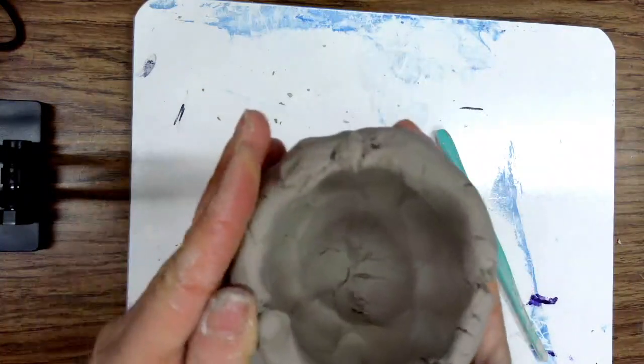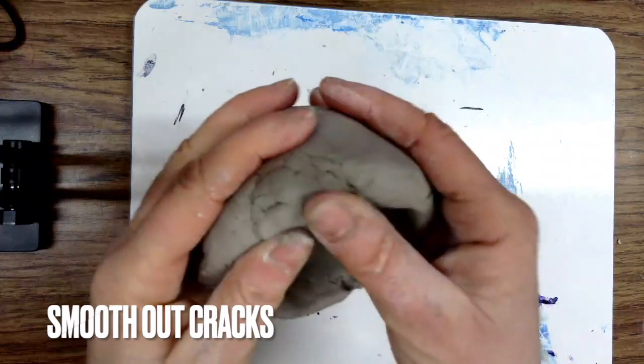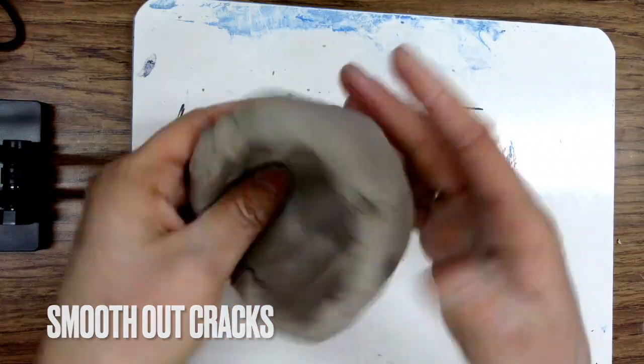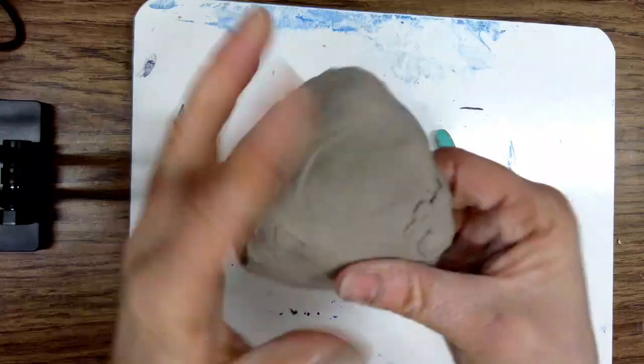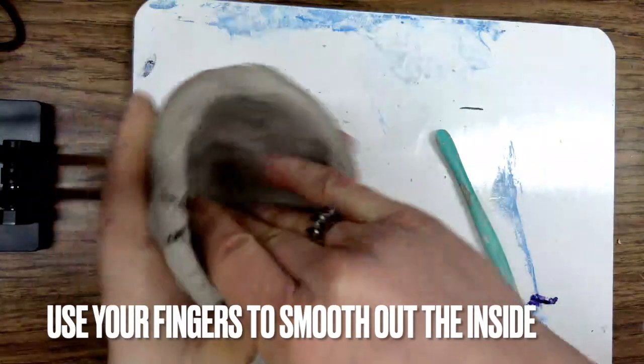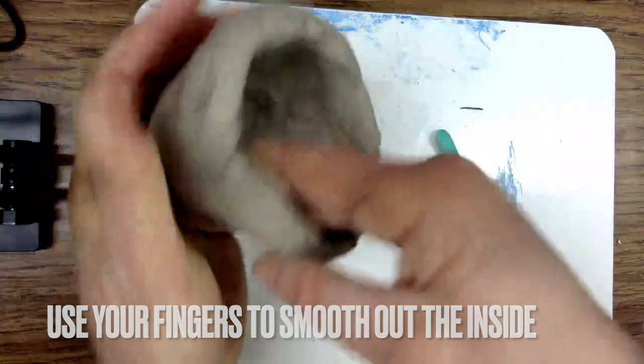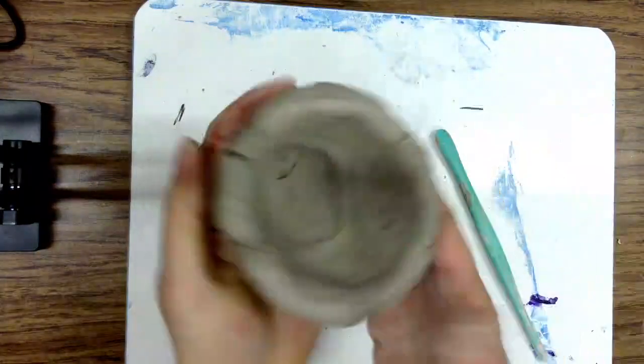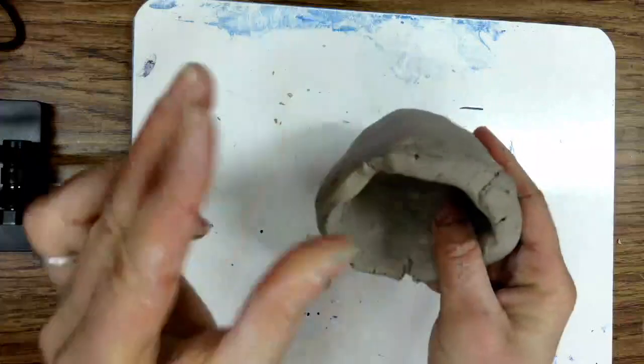Check the width of your pinch pot with your pinky. It should be no thicker than your pinky. Smooth cracks as you go. You can even use the inside of your fingers to spin the pot around and around.